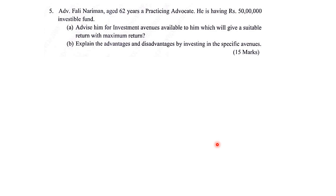In question number 5, it was given that Advocate Fali Nariman, age 62, is a practicing advocate. He has 50 lakhs rupees as investable fund. Advise him on investment avenues available to him which will give him a suitable return with maximum safety. Also explain the advantages and disadvantages of investing in those specific avenues.